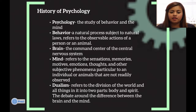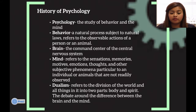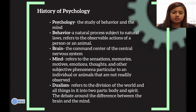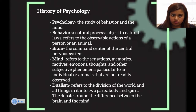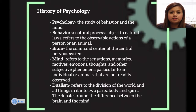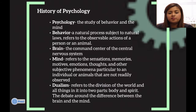The study of behavior and the mind. Behavior: the natural process subject to natural laws, refers to the observable actions of a person or an animal. Mind refers to the sensations, memories, motives, emotions, thoughts, and other subjective phenomena particular to the individual or an animal that are not readily observed. Dualism refers to the division of the world into all things into two parts, the body and the spirit.